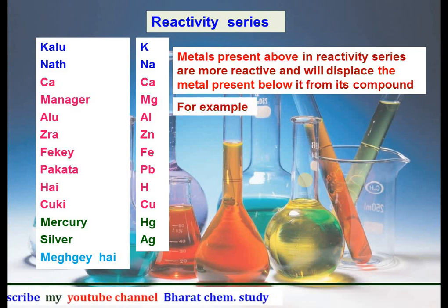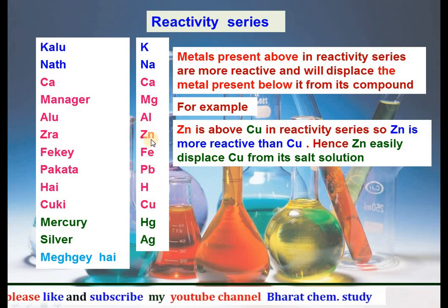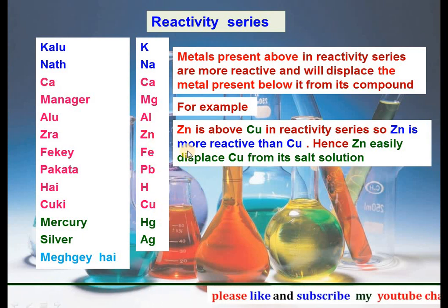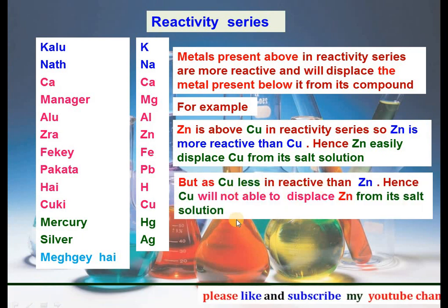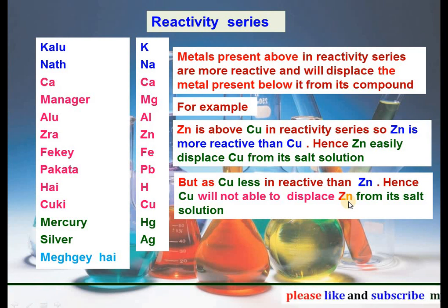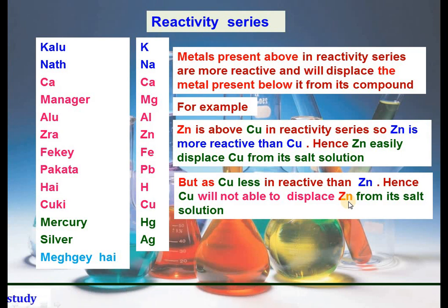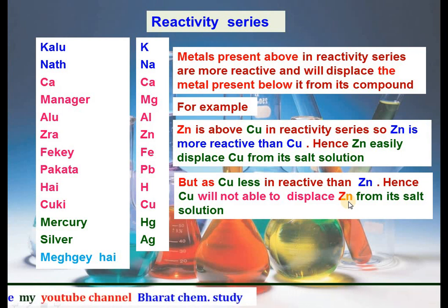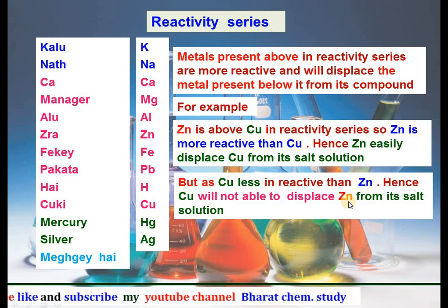Metals higher in the reactivity series are more reactive and will displace metals below them from their compounds. From this figure, zinc is present above copper in the reactivity series, so zinc is more reactive than copper — that's why zinc displaces copper from its salt solution. But copper is less reactive than zinc, so copper cannot displace zinc from zinc sulfate solution; no reaction will occur.